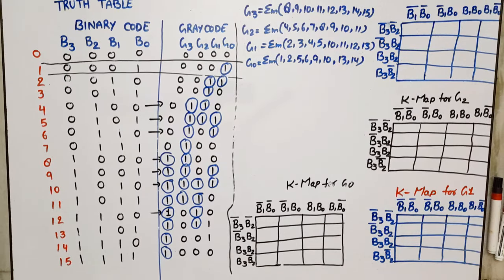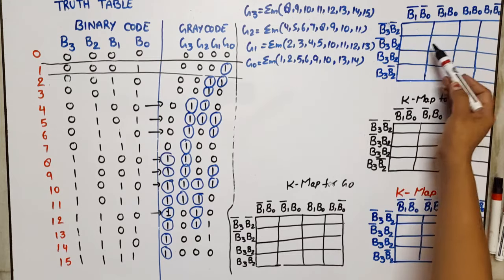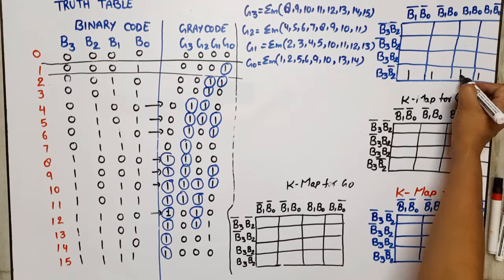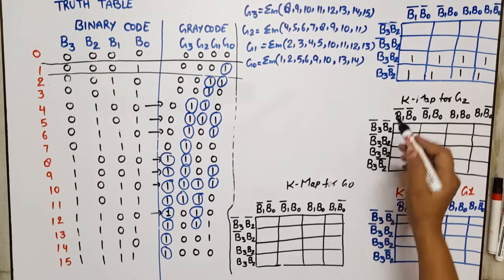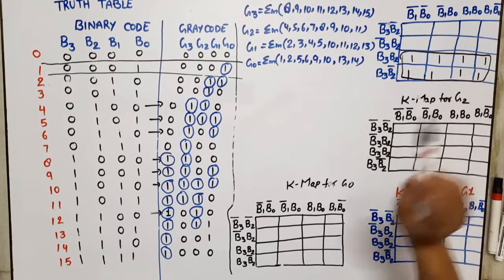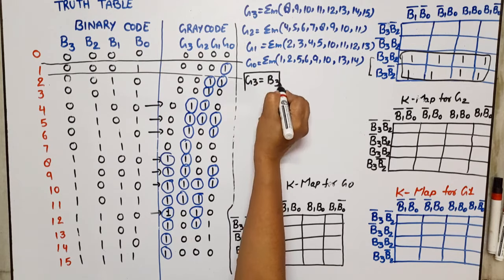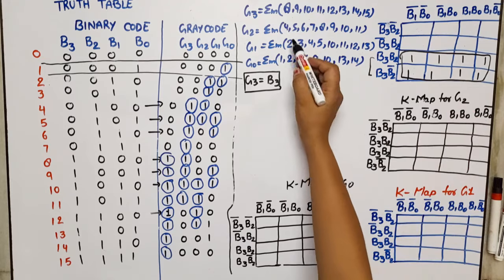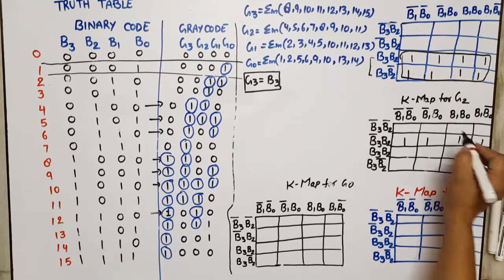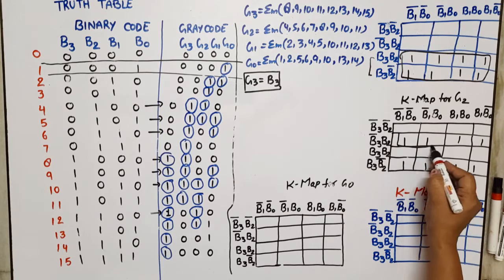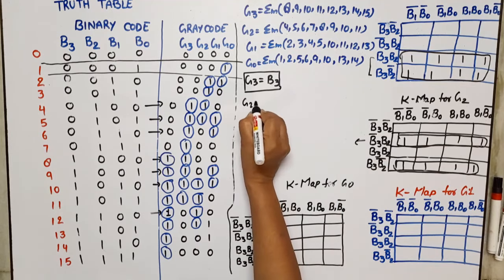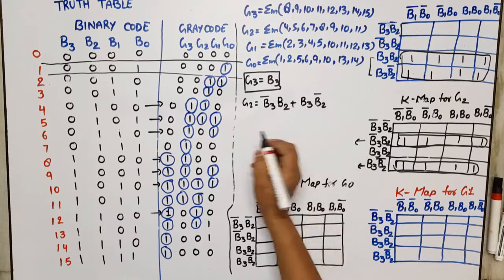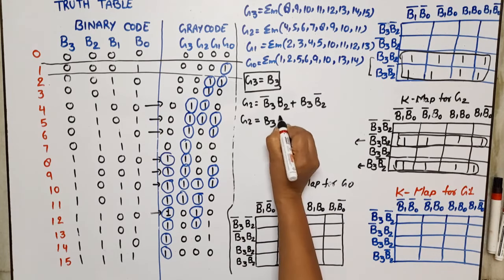Plotting the K-map for G3, we place 1s in cells 8 through 15. This forms one large group (octet), giving G3 = B3. For G2, we place 1s in cells 4 through 11 and group them. We find two quads — one with B3-bar·B2 and one with B3·B2-bar — which simplifies to G2 = B3 XOR B2.